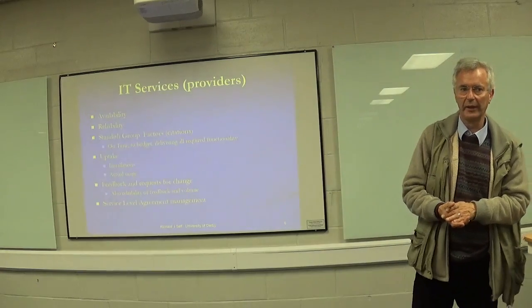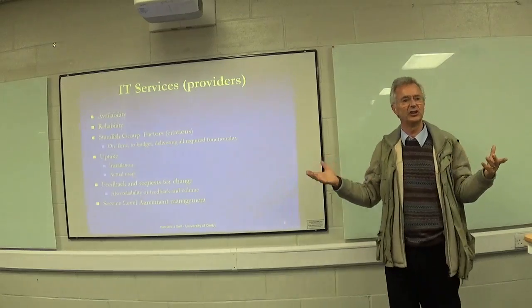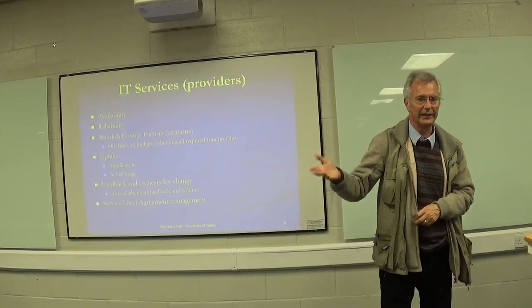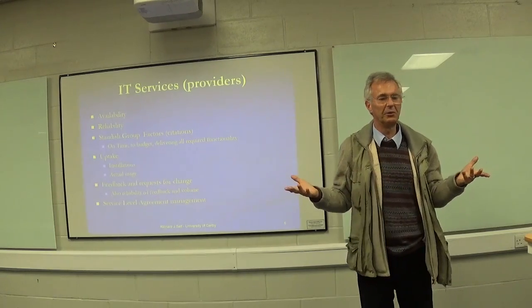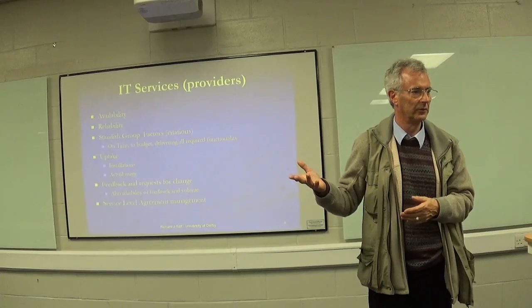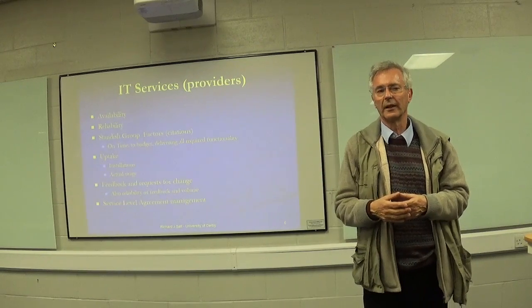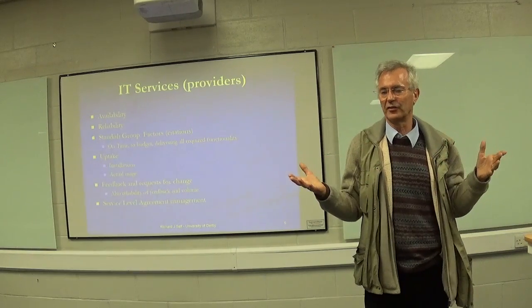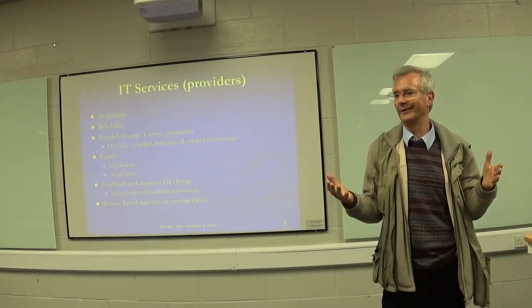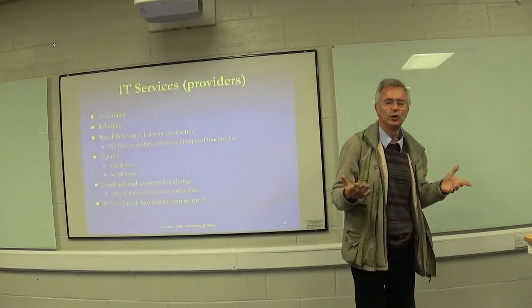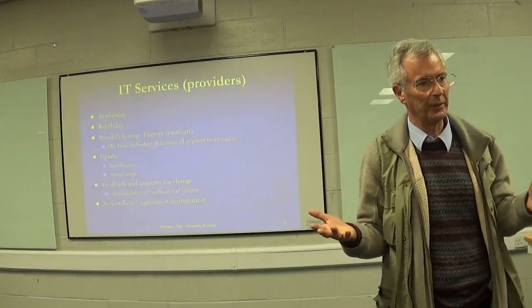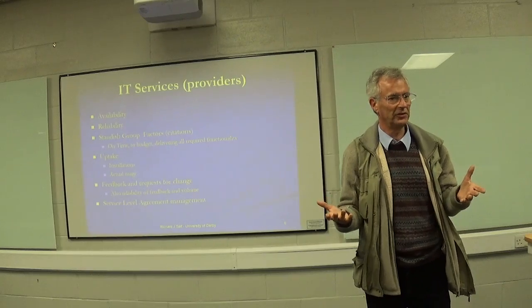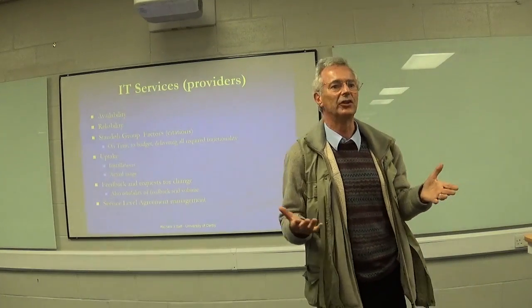In today's environment where apps are being developed all the time and are essentially in a state of permanent beta testing — never the finished product — user feedback becomes even more important. The approach today is: if it breaks, we'll fix it in the next update cycle in a month. Look at the update section on your smart device — probably three quarters of all your apps have got an update. Do you want to provide an IT service that has to be updated because it's broken every month? What message does that give to your users — does it suggest a competent provider or an incompetent one?